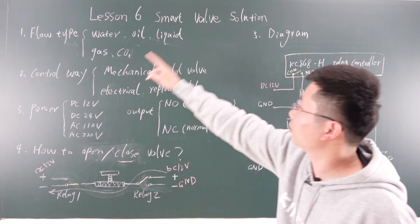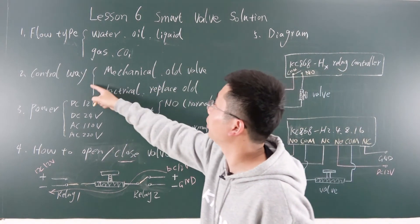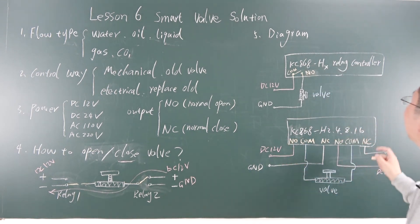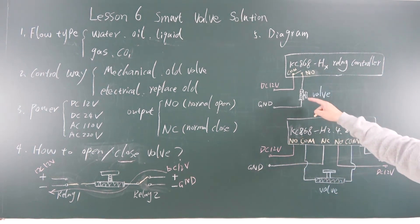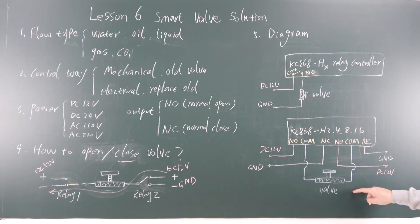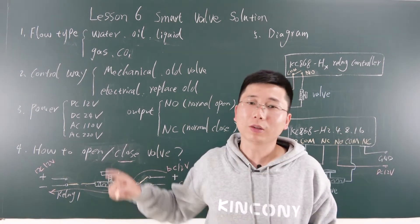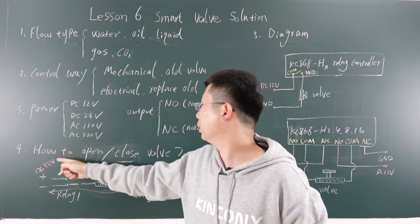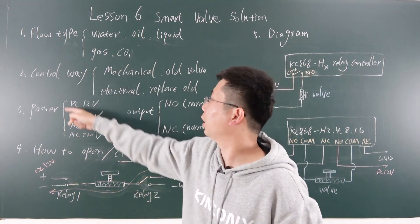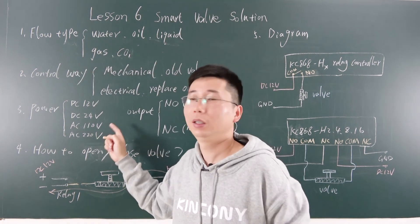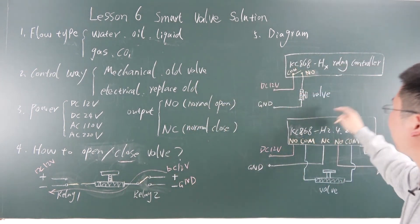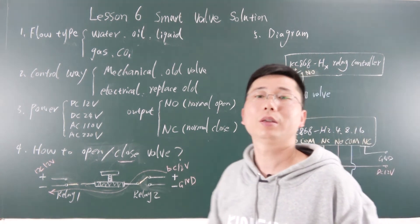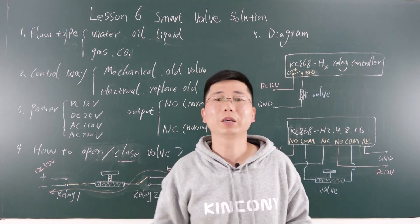So this is some kinds of output used for relay controller to control open and close. And how to use this — you can also make the diagram to control the valve. The next lesson will continue.